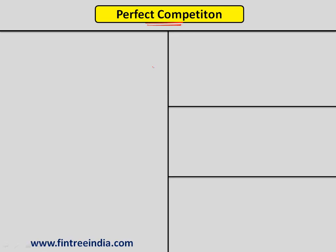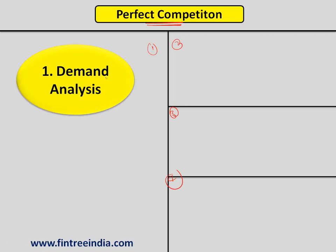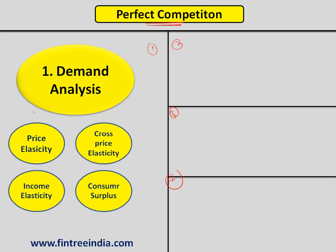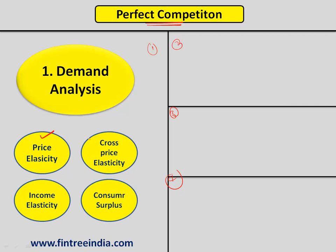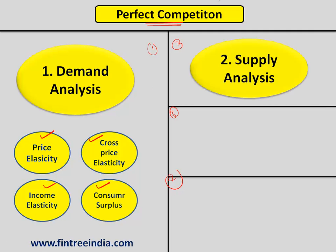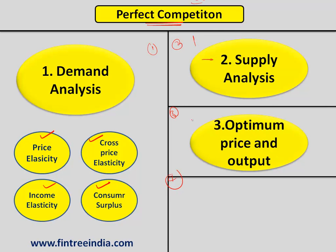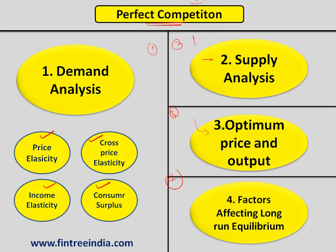Perfect competition will be divided into four major parts. Part one is demand analysis, which subdivides into price elasticity of demand, cross elasticity, income elasticity, and consumer surplus — concepts already dealt with extensively in earlier readings but reviewed here. Part two is supply analysis. Part three is optimum price and output. And finally, the factors that affect the long-run equilibrium.